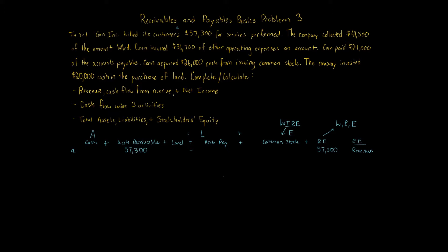Transaction B: the company collected $41,500. In accounting, if you're not told what it is, it's assumed to be cash. So cash goes up $41,500 of the amount billed from the first transaction. Accounts receivable goes down by $41,500 — when you collect what you billed, the services have already been provided and you reduce accounts receivable. The accounting equation balances.